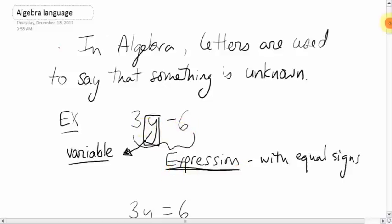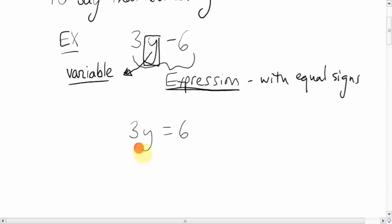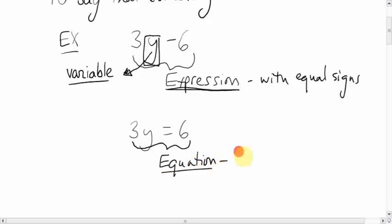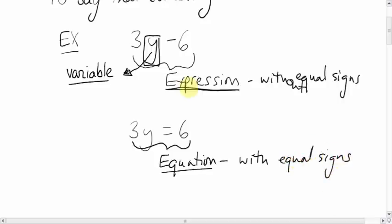Expressions are different from equations. Equations have equal signs — they're math statements with equal signs. So expressions are without equal signs, and equations are with equal signs.